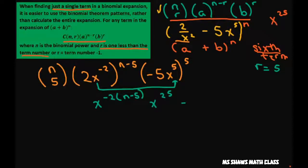And then this x is just going to be x to the 25th power, and we want this to be x to the 25th to find the nth term. So simplify, we have x to the negative 2 times n plus 10, then we have x to the 25th power equals x to the 25th power.